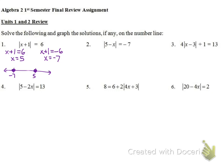Number 2: we're looking at an absolute value equal to -7. An absolute value can never equal a negative number — it's always positive — so this has no solution. Just to verify, let's solve it as if we didn't notice that, and see if a problem comes up.